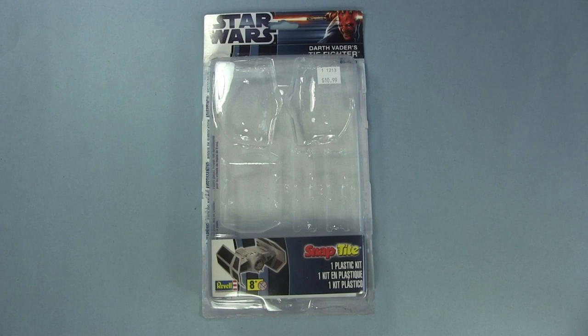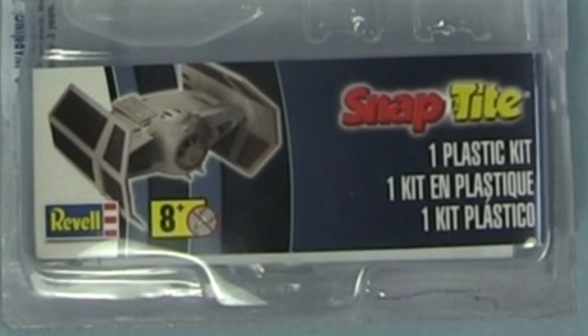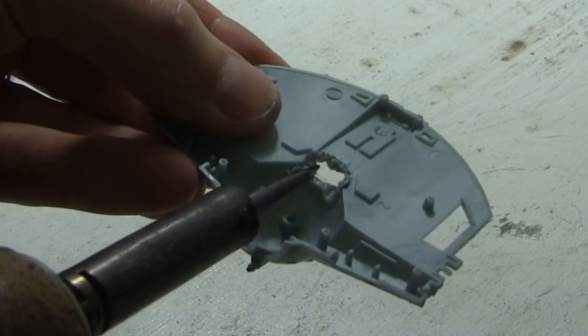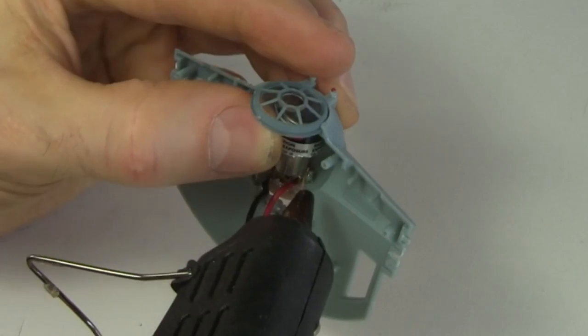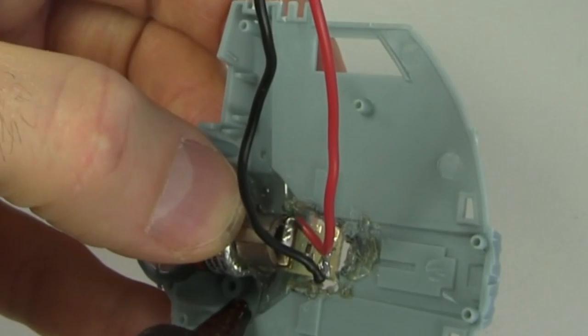First this TIE fighter from Star Wars which came in this packaging, the Snap-Tite by Revell. I start by melting away some of the plastic on the bottom since some of the circuit board will stick out. The only place I can fit the laser is where Darth Vader normally sits.